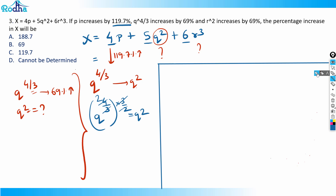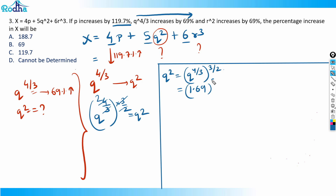Looking at the solution: q² = [q^(4/3)]^(3/2). Since q^(4/3) increases by 69%, it becomes 1.69 times its original value. So q² becomes 1.69^(3/2).